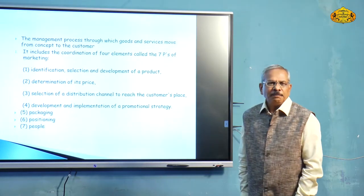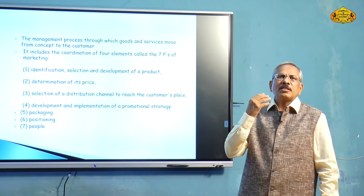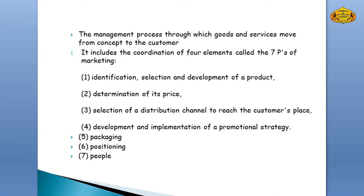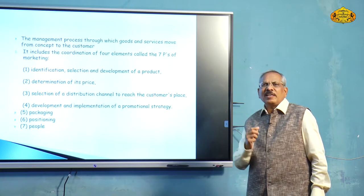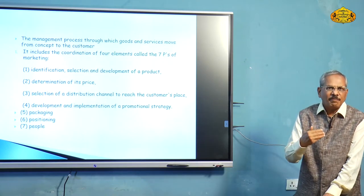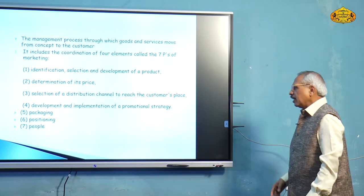When we talk about marketing, initially it was known as the four P's of marketing, now popularly known as the seven P's. The seven P's are related to identification, selection and development of product; determination of price; selection of distribution channel; and development and implementation of promotional strategy. So product, price, distribution and promotion were the original four important factors. Nowadays three additional factors are included according to the requirements of time, challenges and competition — and they are packaging, positioning, and people.